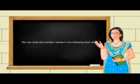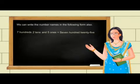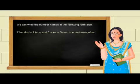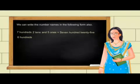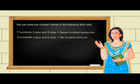We can write the number names in the following form also. Seven hundreds, two tens, and five ones is equal to seven hundred twenty-five. Six hundreds, three tens, and six ones is equal to six hundred thirty-six.